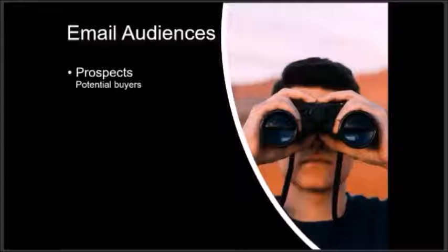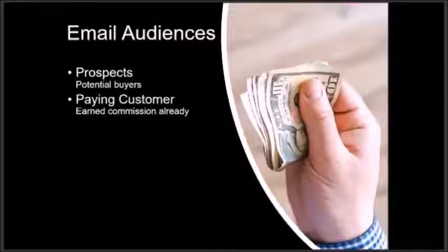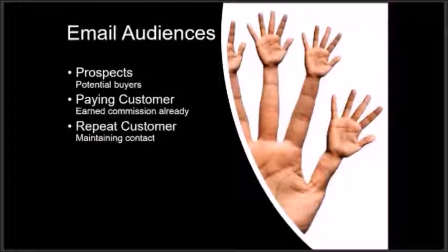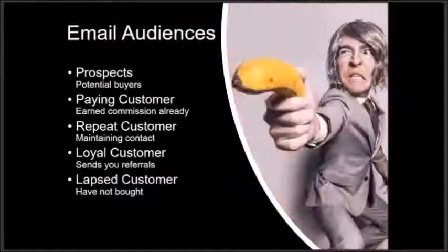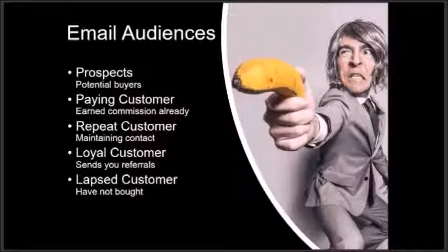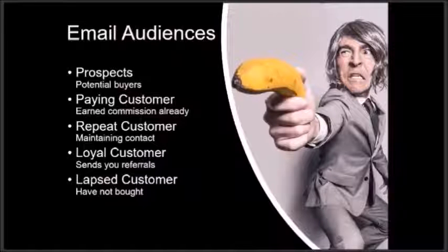Here's another tip — you can group contacts according to customer type. Your prospects are potential buyers and sellers. Your paying customers are those you've already earned commission from. Repeat customers are those you maintain contact with, waiting for them to reach the next step in their cycle. Your loyal customers are clients who send you referrals, or lapsed customers — people who have not yet bought but are hoping the market will turn and will buy at some point.